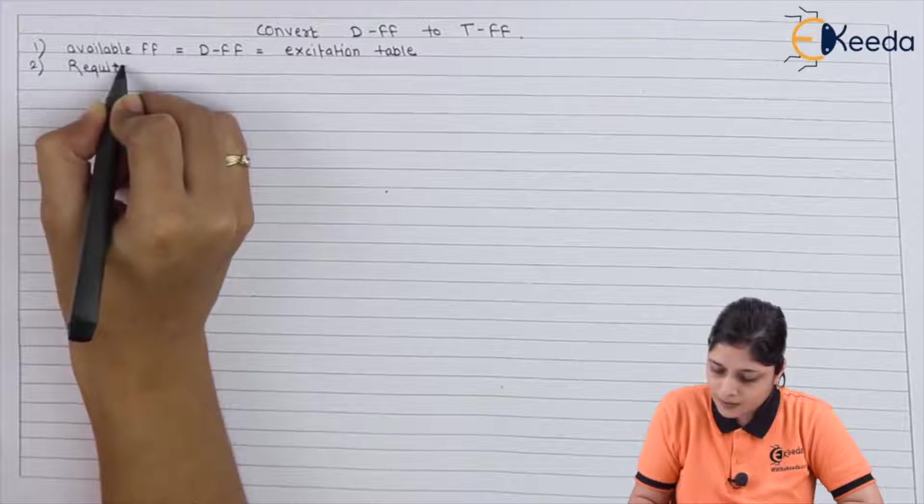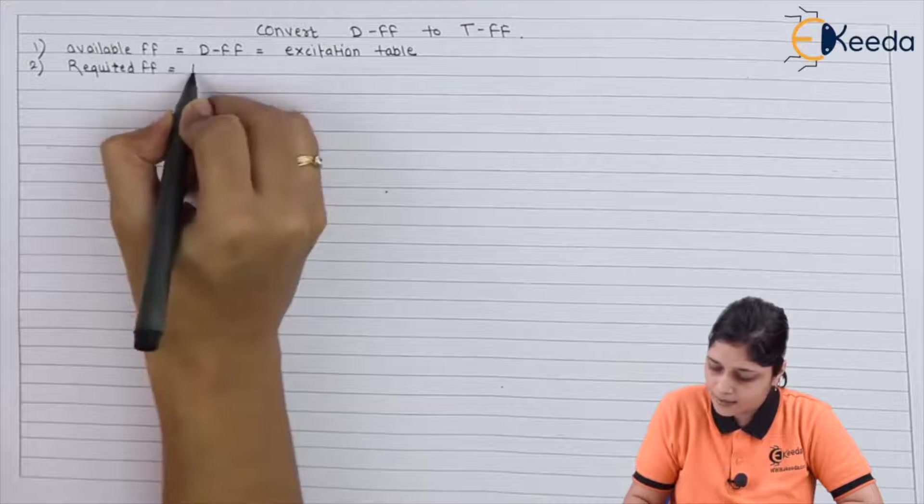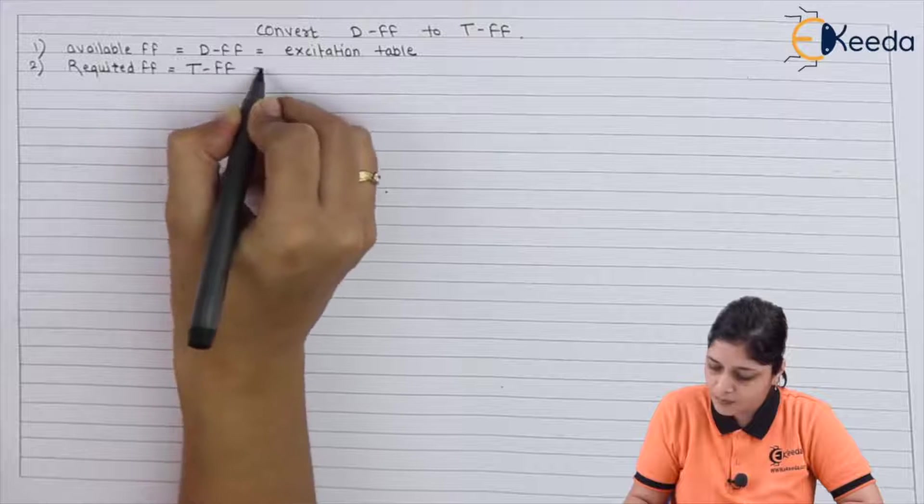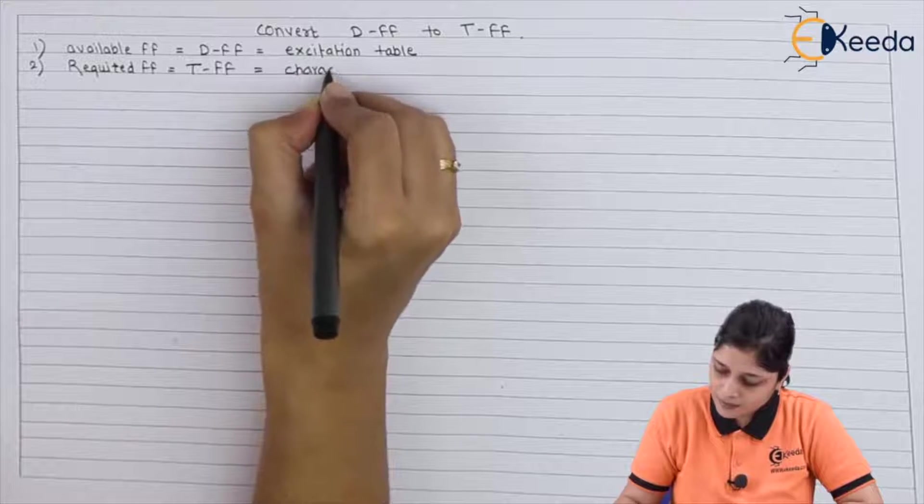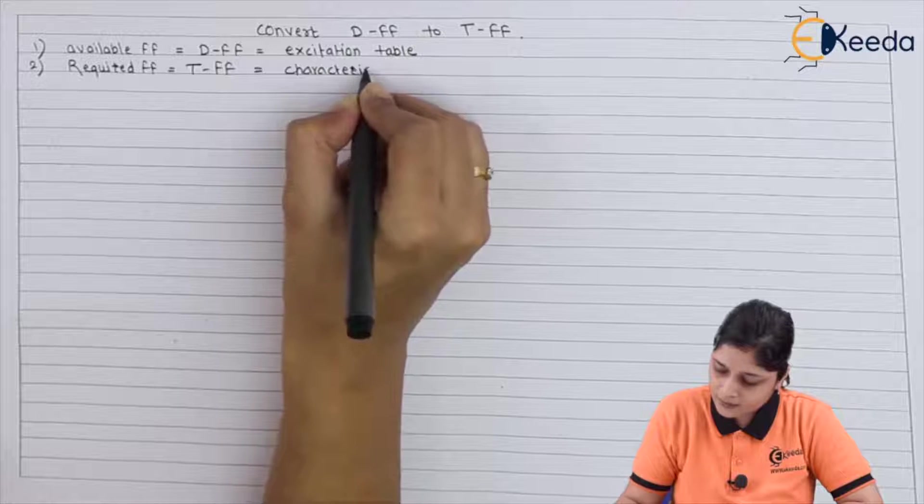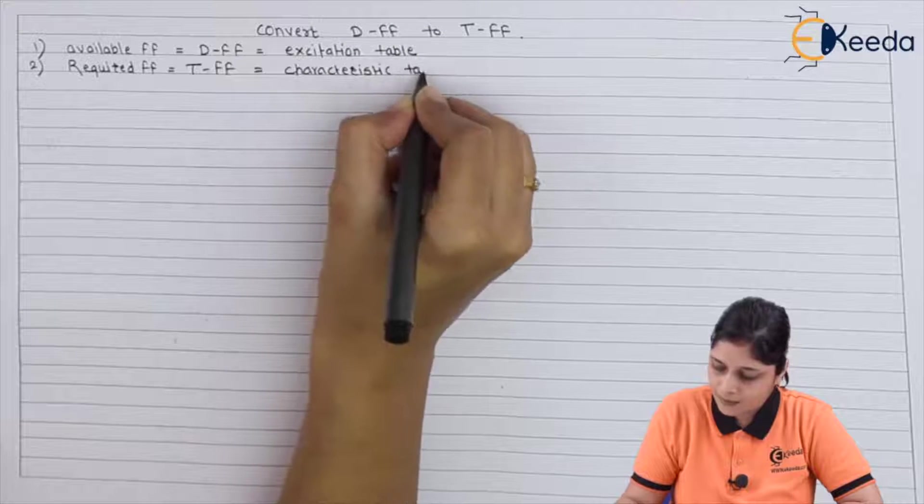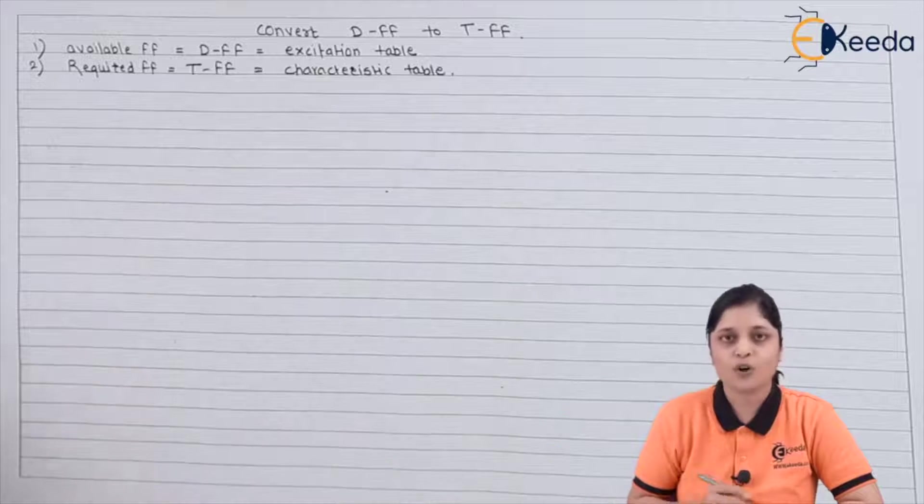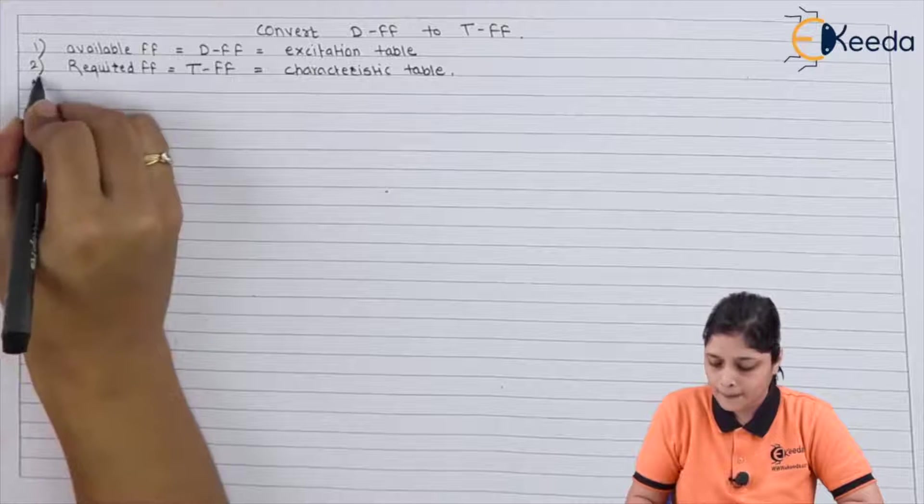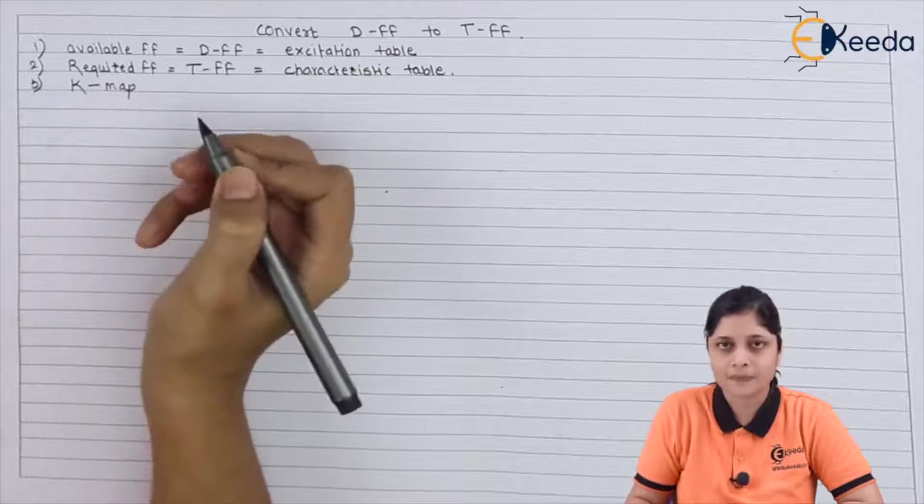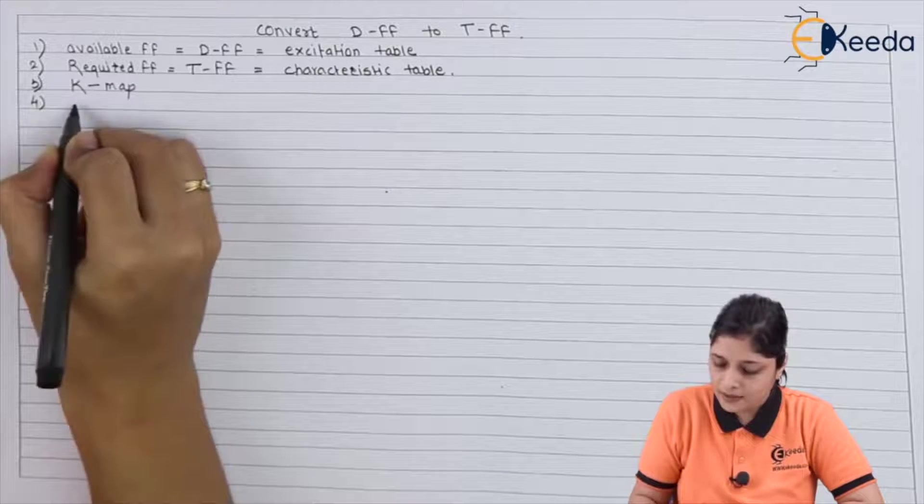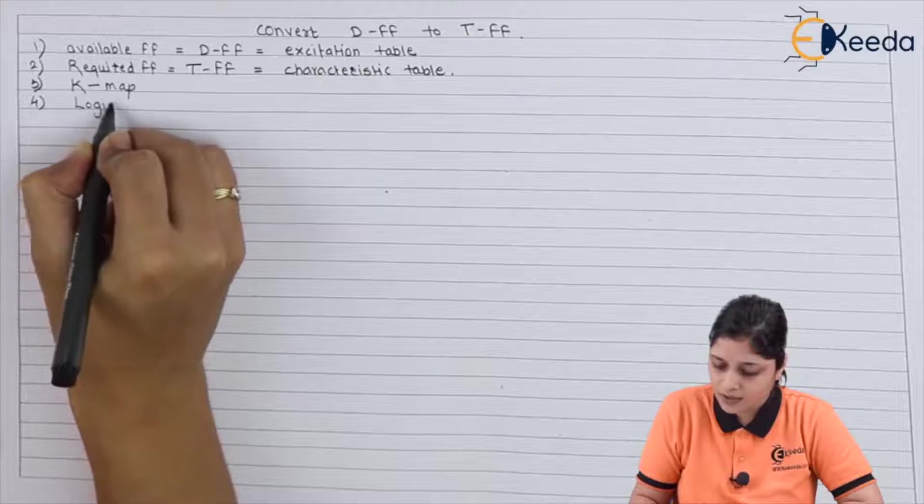Second, the required flip-flop is T flip-flop. We will write the characteristic table for T flip-flop. After that, we will draw the K-map, and lastly we can draw the logical diagram.